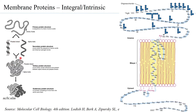Once secondary protein structures are formed, the polypeptide can be further looped or folded through hydrophobic interactions, ionic interactions, disulfide linkages, van der Waals forces, or hydrogen bonding, giving rise to a globular tertiary structure. The tertiary structure is the native conformation of a protein — the conformation in which it is most biologically active.